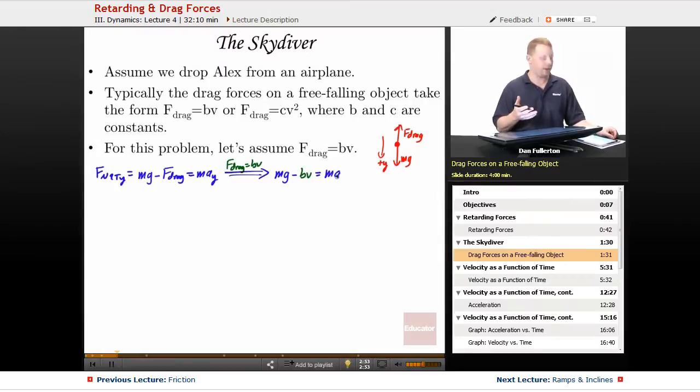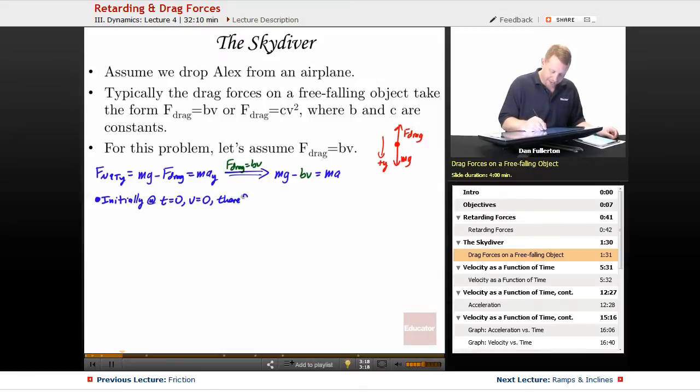Now let's take a look at what happens when we first push Alex from the plane. Initially, at time t equals 0, Alex's velocity is 0. Therefore the drag force is 0, mg equals ma, and a is just equal to g. The acceleration is equal to the acceleration due to gravity. So therefore we can write at that point acceleration is equal to g.